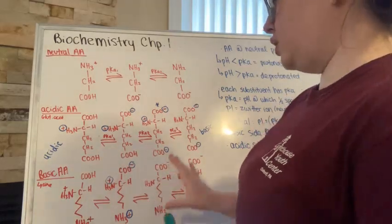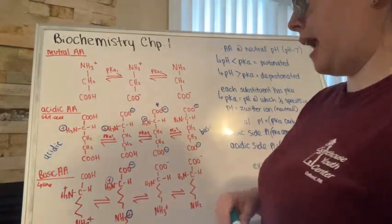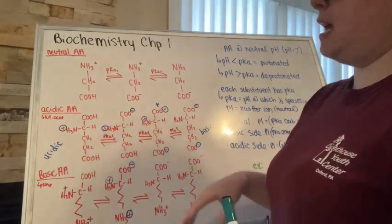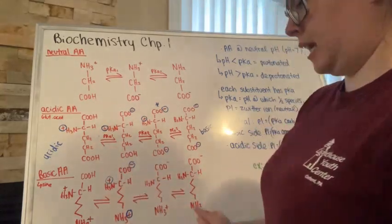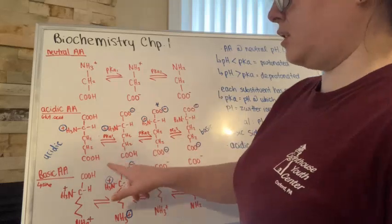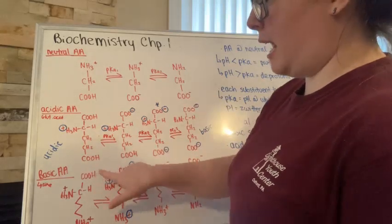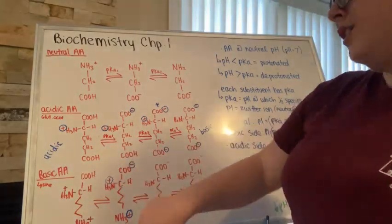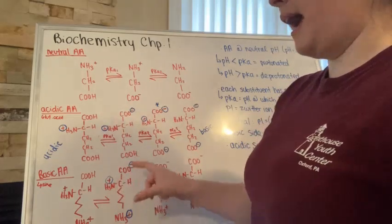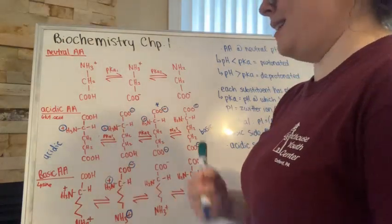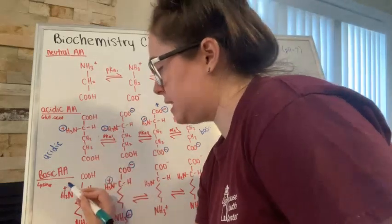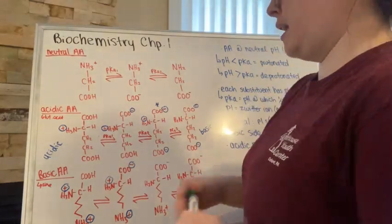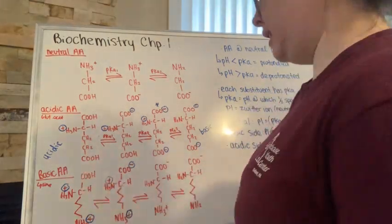An important thing to note is the three pKa values that exist for this molecule due to its three charged side groups. If we move lysine into a more acidic solution, the COO minus group would be given an H and becomes COOH. That means lysine would have a charge of positive two in an acidic solution, because the negative charge would no longer exist and we have a positive charge here and a positive charge there.